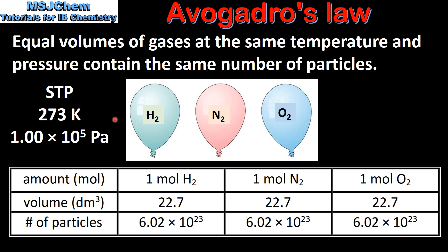Here we have three balloons with each balloon containing one mole of gas. At STP, which is a temperature of 273 Kelvin and a pressure of 1.00 x 10 to the power 5 pascals, each balloon has a volume of 22.7 decimetres cubed. And according to Avogadro's Law, each balloon contains the same number of particles.